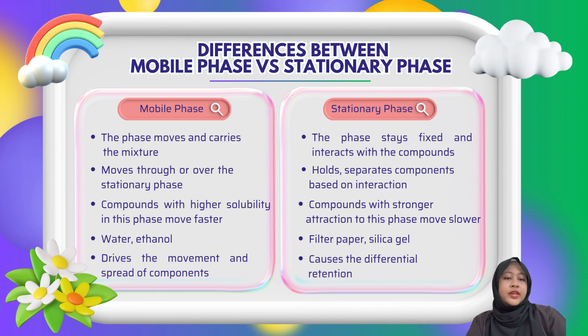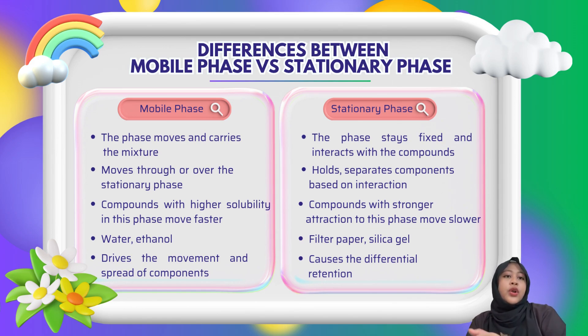In short, the mobile phase moves the substance along, while the stationary phase holds them back depending on how they interact with it.